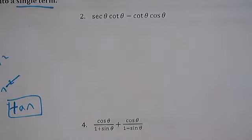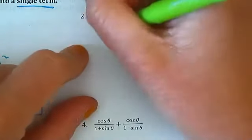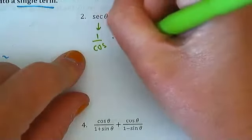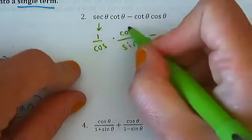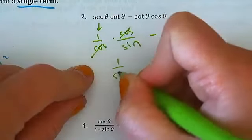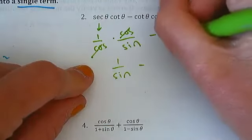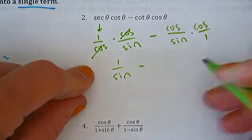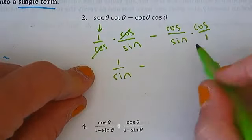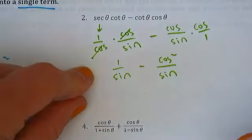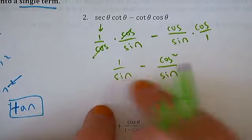Number two — if you want to pause and try it on your own, go for it. I see secant, I'm going to change that into one over cosine. I see cotangent, I'm going to change that into cosine over sine. What can we do — boom boom. Cotangent is cosine over sine, and this is times cosine over one. No canceling here, but remember how you multiply two fractions.